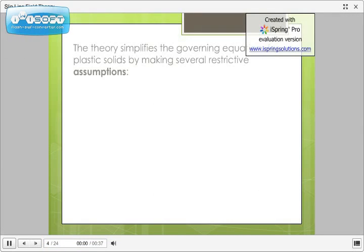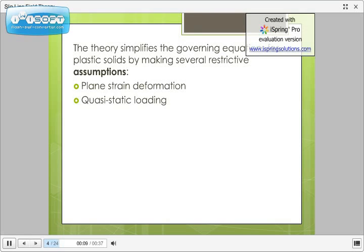Let us now look at the assumptions where Slipline Field Theory is valid. Plane strain deformation. We all know what is plane strain. A plane strain is a condition where epsilon z equals zero. Quasi-static loading. This means there is a constant shear stress at interfacial boundary. Usually either a frictionless condition or a sticking friction is assumed.